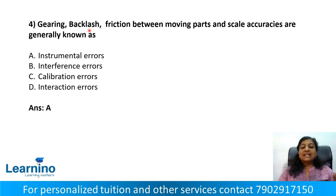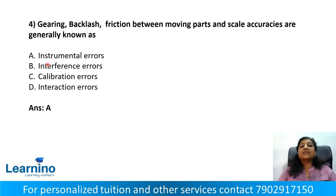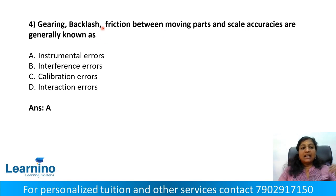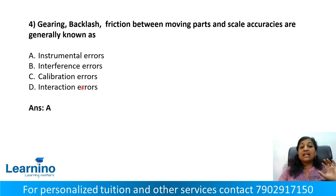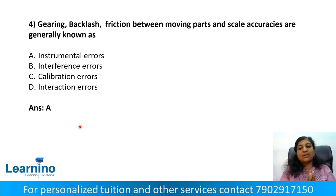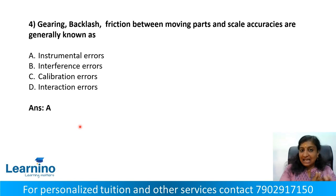Question number 4. Gearing, backlash, friction between moving parts, and scale accuracies are generally known as: option A, instrumental errors; option B, interference errors; option C, calibration errors; option D, interaction errors. The answer is instrumental errors — instrumental errors refer to errors of a measuring instrument, or the difference between the actual value and the value indicated by the instrument.